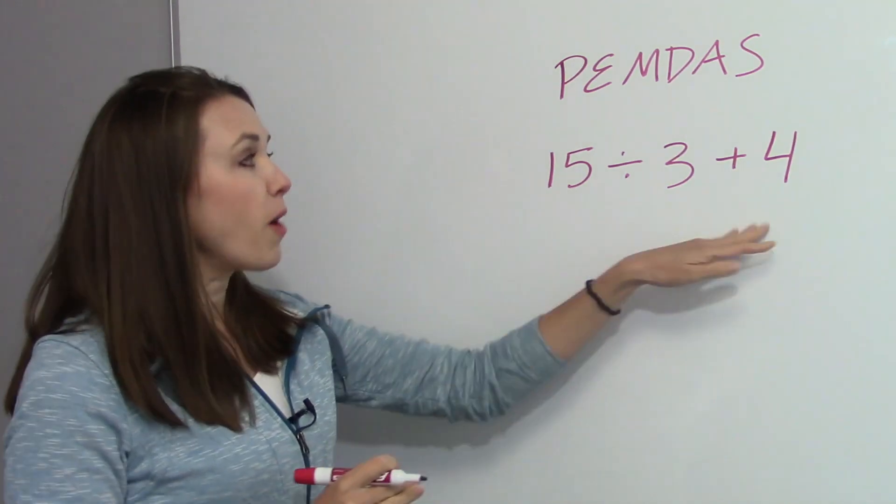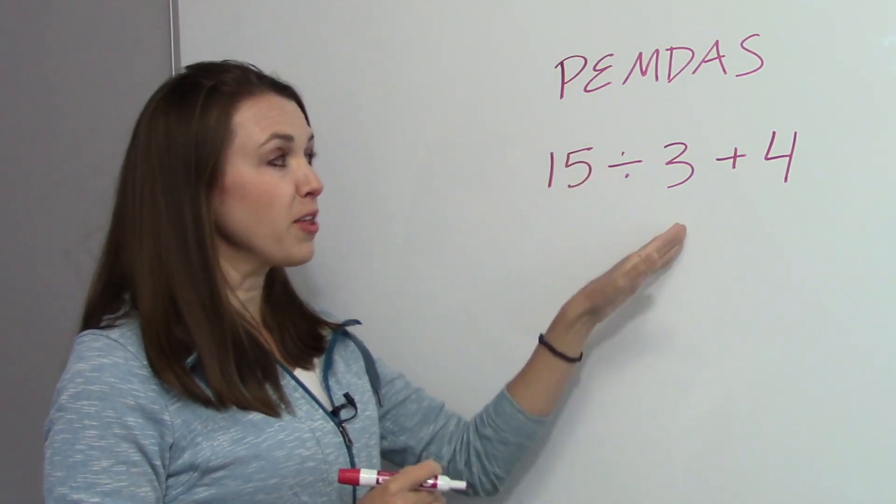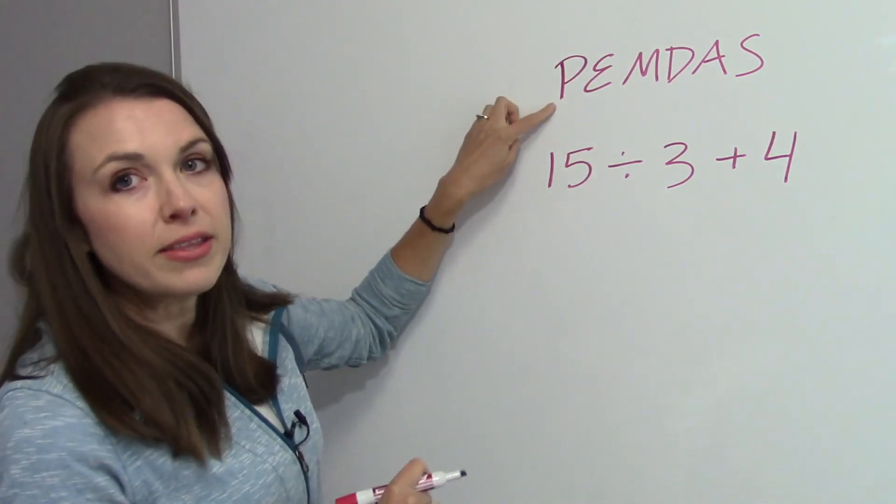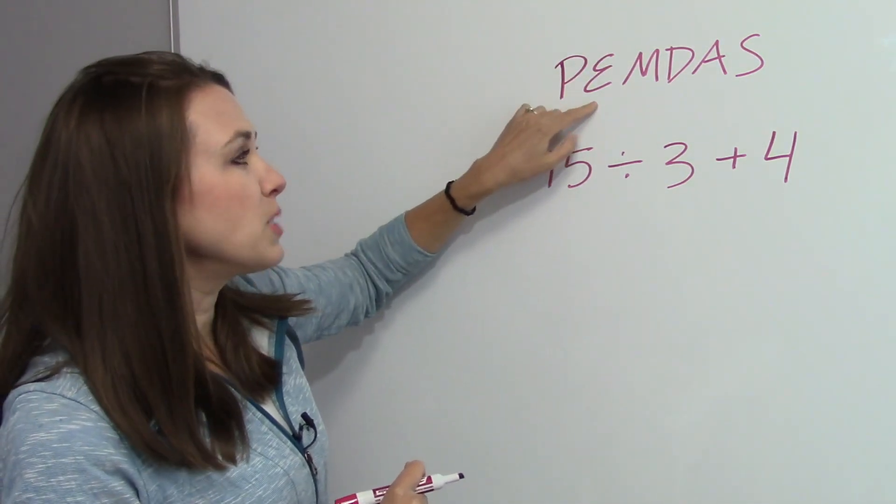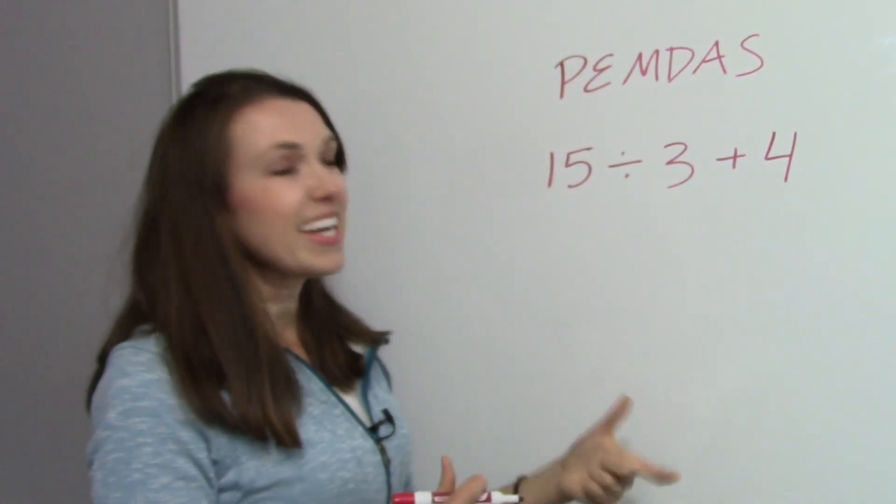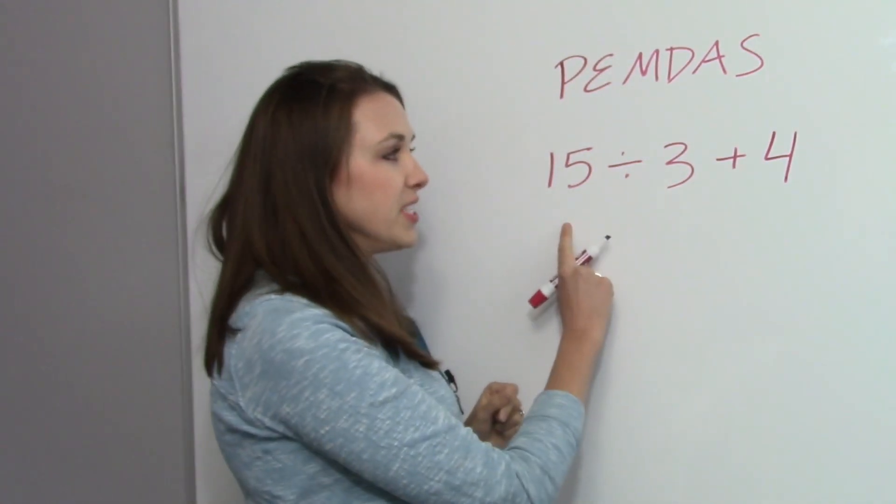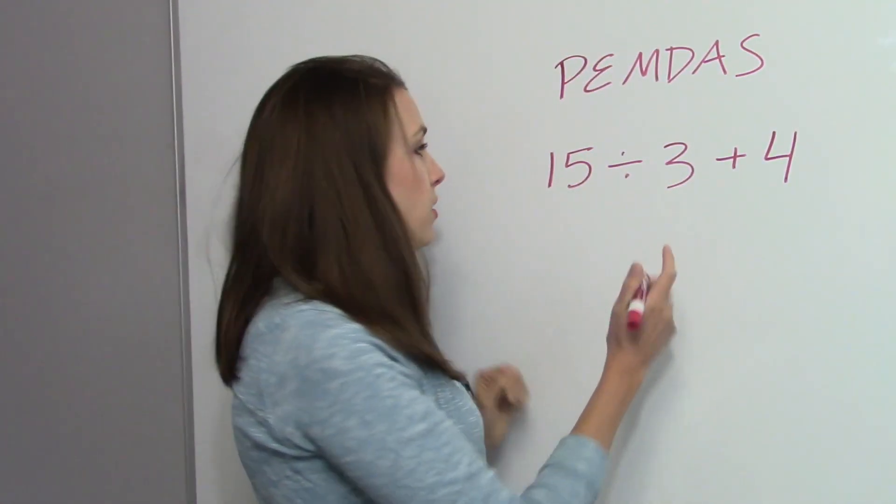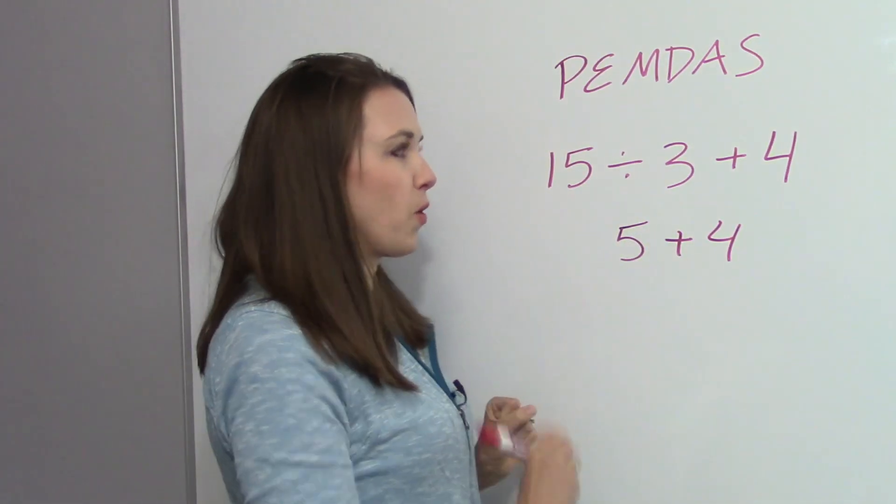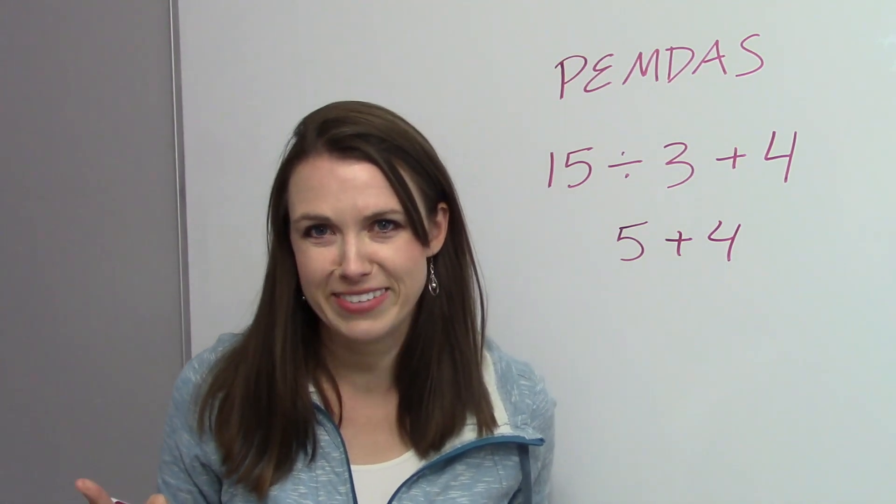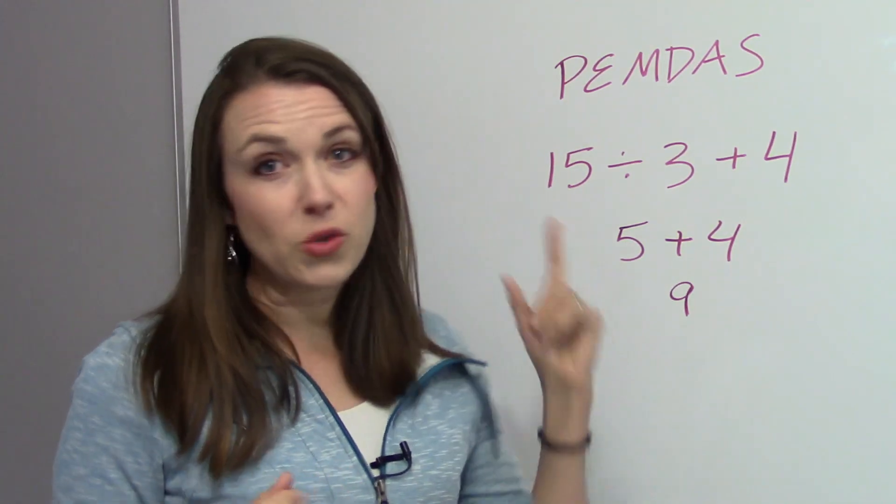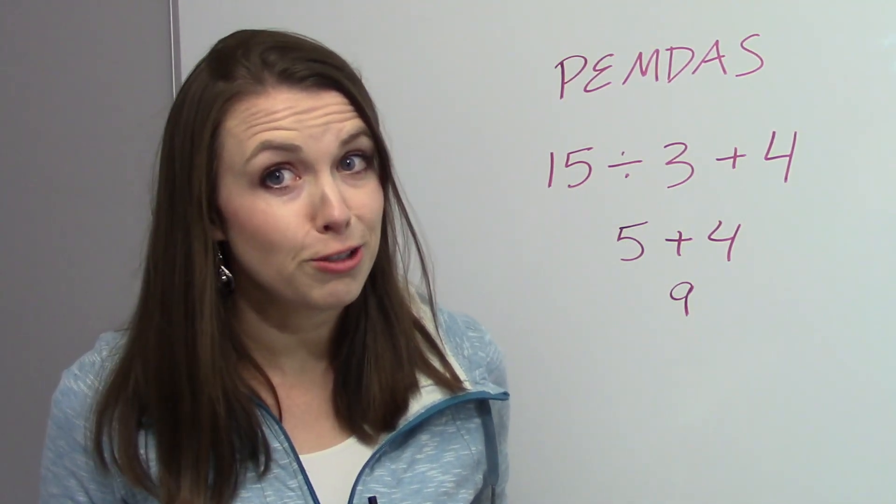So here we have our problem. 15 divided by 3 plus 4. So we start from the left to the right. Now, any parentheses? No. Exponent? No. Multiplication? No. Division? Yes. So we're going to start with the division. So we have 15 divided by 3, which is simply 5. So now we have 5 plus 4. And that's really all that we have. So 5 plus 4 is 9. This is a pretty simple problem. So let's do some more challenging problems.